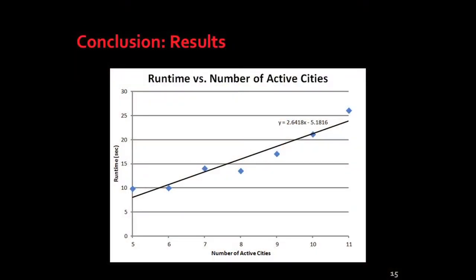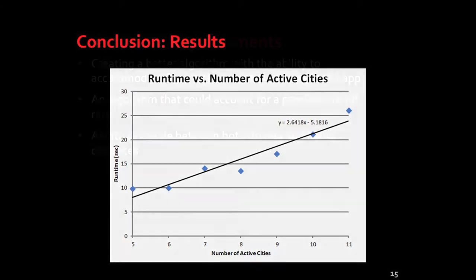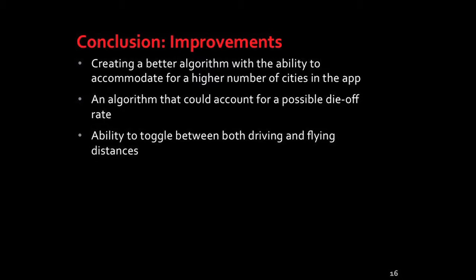If you wanted to add more cities to the calculations, it's possible and the runtime will increase in a linear fashion. Adding 11 cities will take anywhere from 25 to 40 seconds to load. One cool thing about the app is that you can leave, browse the internet or play a game, and come back when the cities have loaded to find your final route calculated. Potential improvements include: a better algorithm to accommodate more cities beyond the current 11-city limit; accounting for a possible die-off rate, which is more realistic in a zombie apocalypse; and the ability to toggle between driving and flying distance.